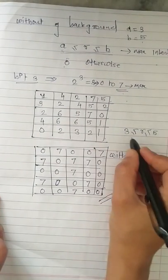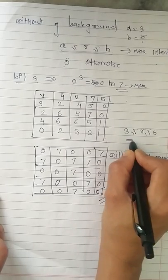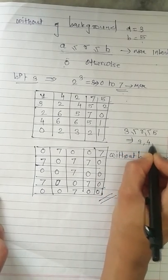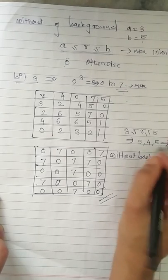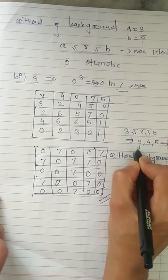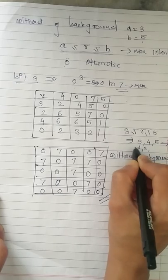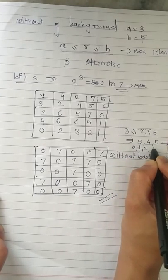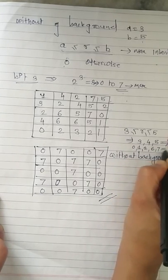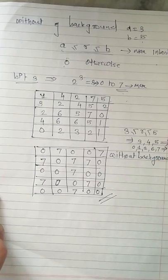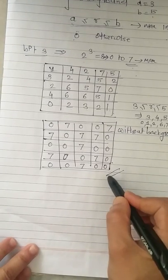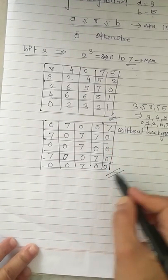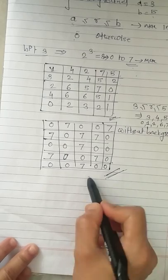Therefore the intensities belonging to this range — that is 3, 4, or 5 — are replaced with 7. Otherwise the rest, that is 1, 2, 0, 6, and 7, are replaced with 0. Therefore after performing the replacement we get the output. From this input intensity we are getting the output image with these intensities.